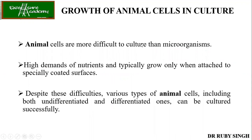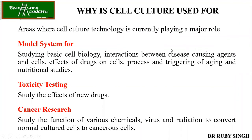The growth of animal cells in culture is more difficult compared to microorganisms because animal cells have high demands for nutrients. It is not like microorganisms where providing glucose is sufficient. For animal cells you need to provide growth factors and vitamins, and also a proper surface so the cells can attach and grow. Despite all these difficulties, various types of animal cells — both undifferentiated and differentiated — can be cultured successfully, and we now have enough advancement to culture any kind of animal cell.